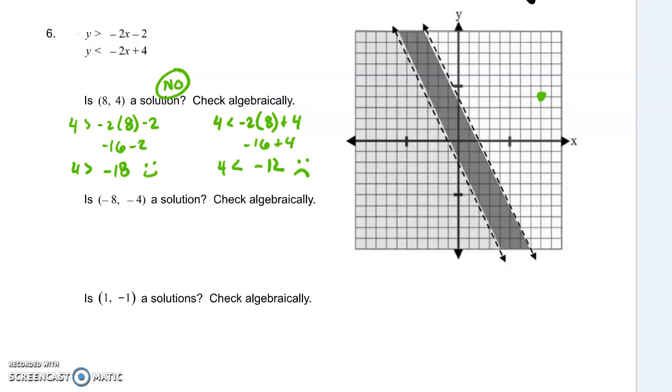So in this case, that means I'm going to substitute 4 in for my y and 8 in for my x. I see it does work for my first inequality, but not for my second. It's not a solution to the system then, algebraically and then graphically.